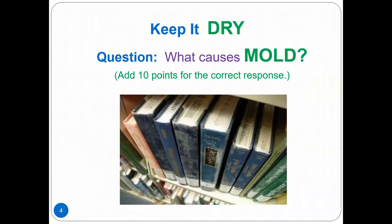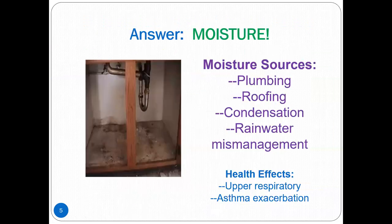The first principle is keep it dry. Do you know what causes mold? Give yourself 10 points if you said moisture. Moisture is caused by common household activities such as cooking, cleaning, and taking showers. People, pets, and household appliances also produce moisture. Some other sources of moisture in our homes are plumbing and roofing leaks, condensation, and the mismanagement of rainwater.